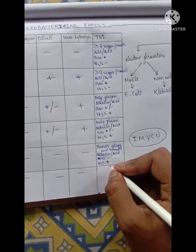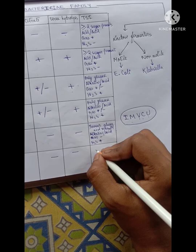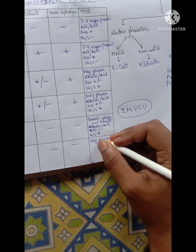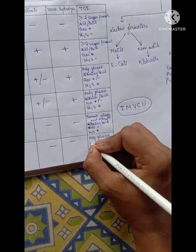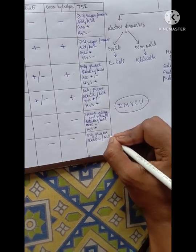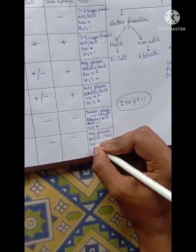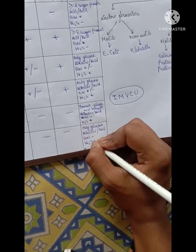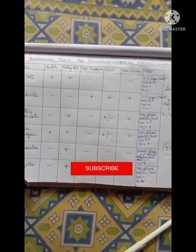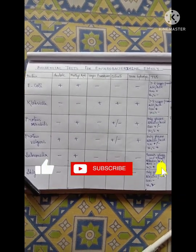The last is Shigella. For Shigella, again it ferments only Glucose. So again it will produce Alkaline slant, Acid butt (KA). Gas will be negative and H2S will also be negative. So this is the entire summary of all the biochemical tests for the Enterobacteriaceae family. Thank you.